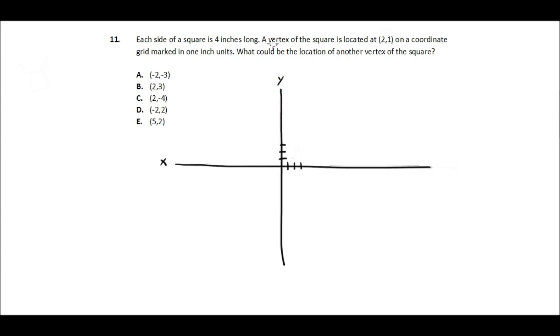To just define vertexes quickly, a vertex is just the corner of a square. It's just any one of the corners of a square, or of a shape.